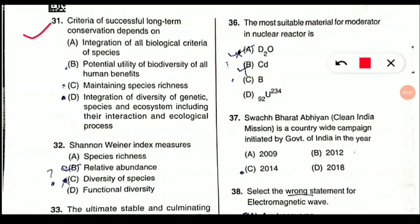Question 31 asks: criteria of successful long-term conservation depends on what? The correct option is D — integration of diversity of genetic species and ecosystem, including their interaction and ecological process. All this integration will prove as successful long-term conservation.